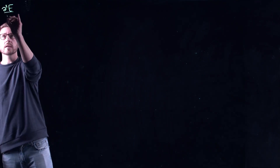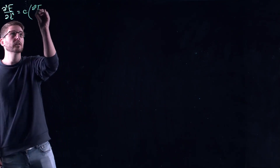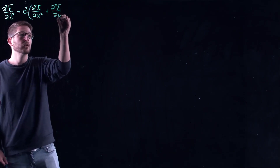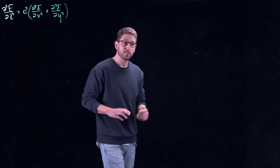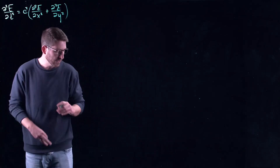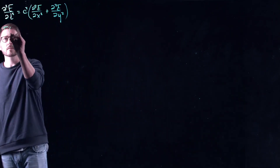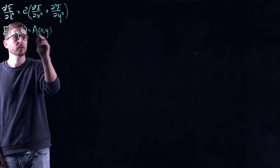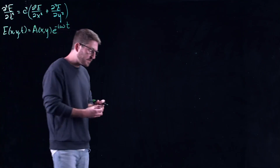Let's start with the two-dimensional wave equation. I'm going to use e as my unknown variable, and here I have c squared times the Laplacian operator. The first thing I want you to remember is what a plane wave solution is — we talked about this early on when we discussed special solutions to the wave equation. A plane wave solution has a profile A and moves like sines and cosines with a specified frequency.